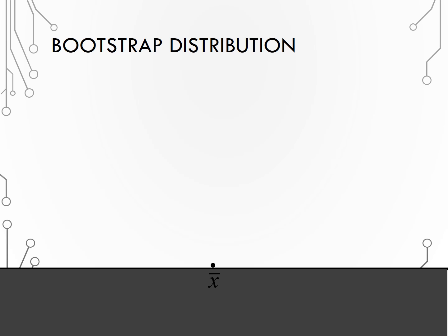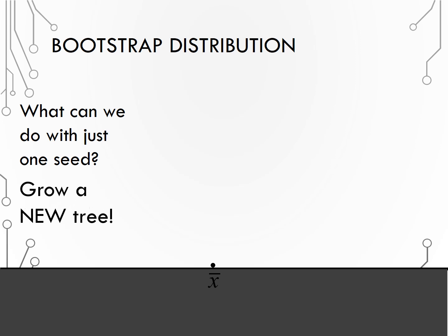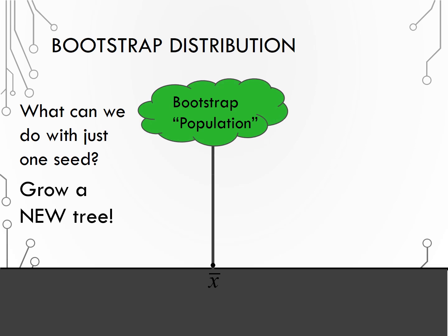So what can we do with one seed? We can grow a new tree. We can create a hypothetical bootstrap population, which is just many, many copies of the original sample. Assuming the sample is representative of the population, the bootstrap population and true population should be similar, at least in terms of their spread. Continuously sampling from the bootstrap population and obtaining many sample statistics should produce similar results as sampling repeatedly from the true population, but without the time and cost the latter would require.